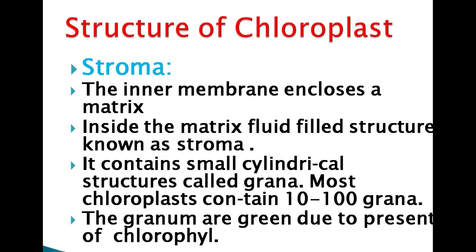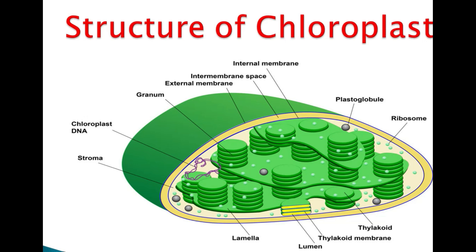Most chloroplasts contain 10 to 100 grana. Grana are green due to the presence of chlorophyll. The outer membrane is smooth. The stroma is the fluid present inside the inner membrane matrix. Each single cylindrical structure is called a granum.